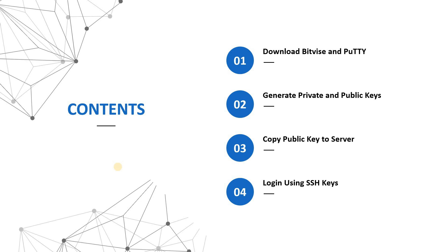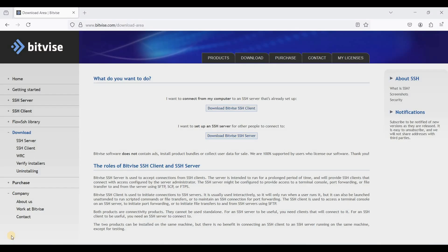I'll show you the process. First you need to download BitVise and PuTTY — these are free SSH clients. Next you need to generate the private and public keys, copy the public key to your server, and log in using SSH keys. Once you have successfully logged in using SSH keys, you need to disable password-based login.